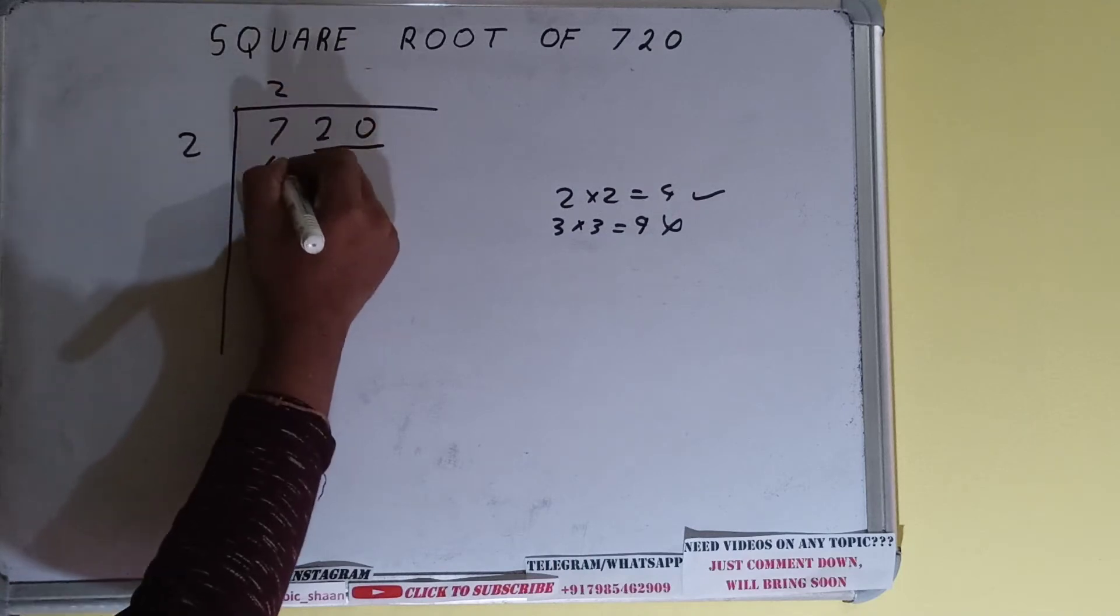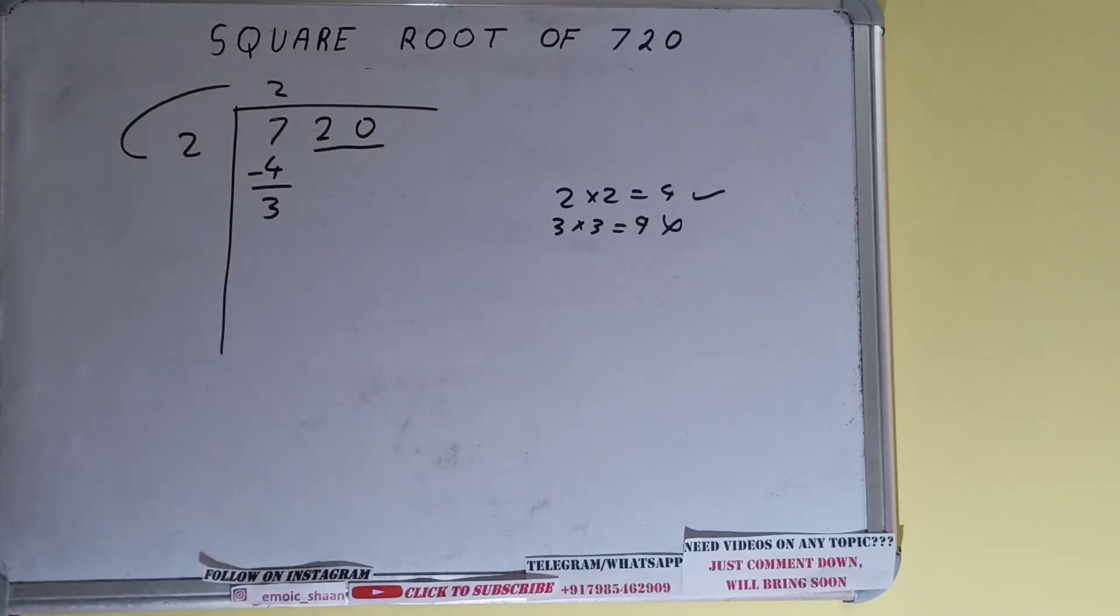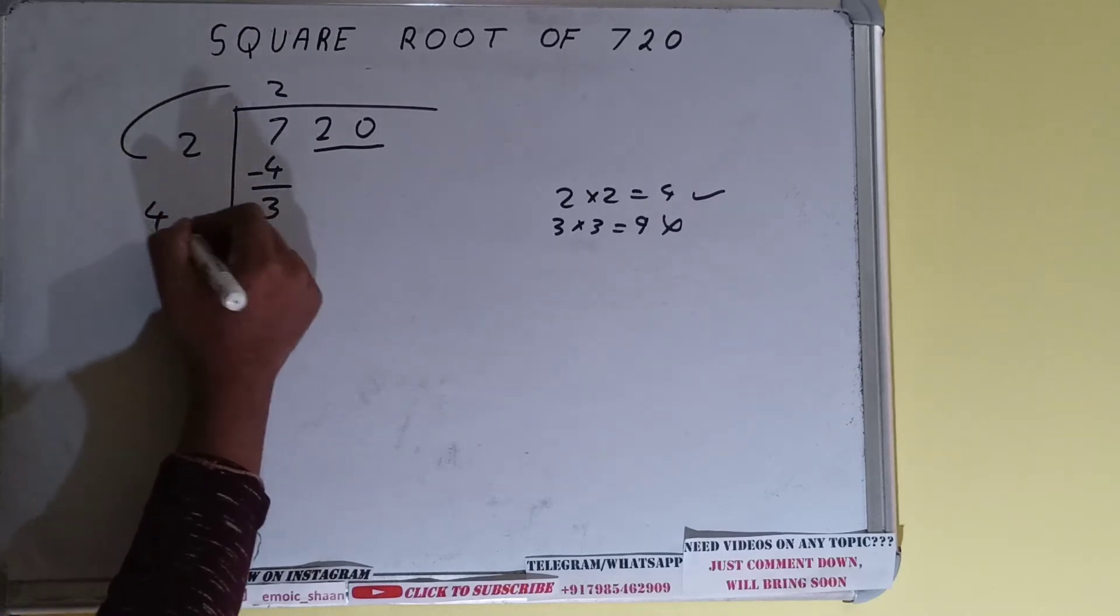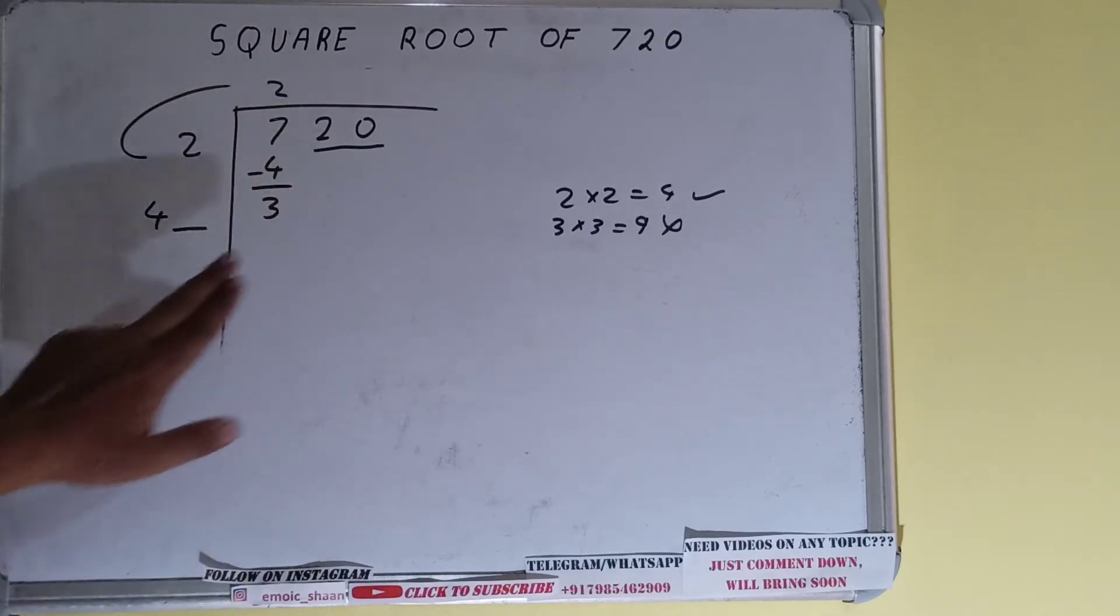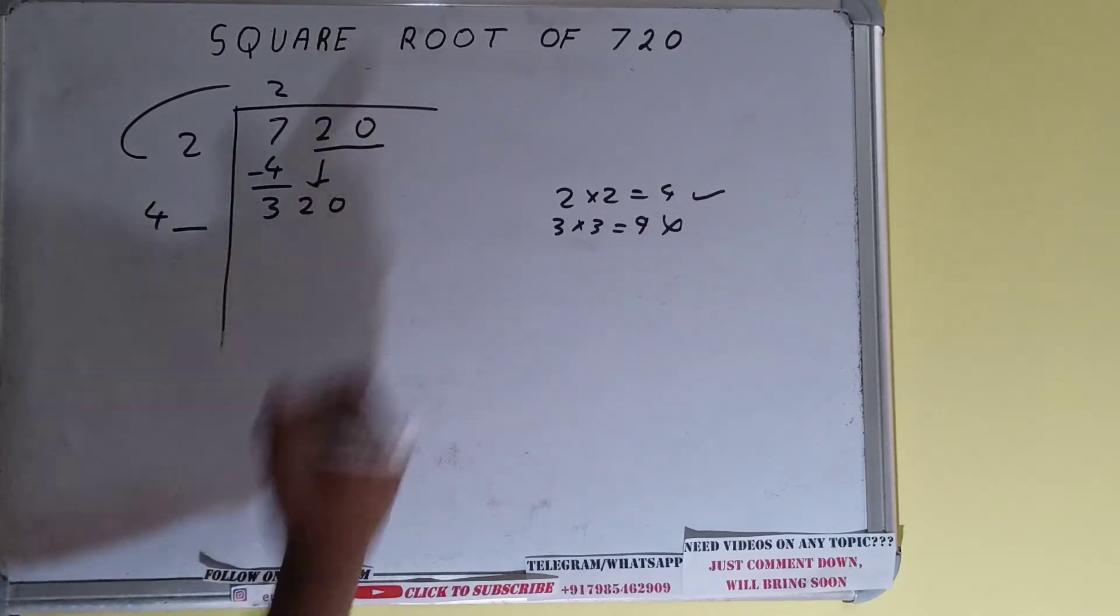Subtract it and 3 will be left. Now we need 2 into 2, right? So do 2 plus 2, it will be 4, and keep one digit extra. And this number we need to make it big so that we can divide. So bring the next pair down and it will become as 320.